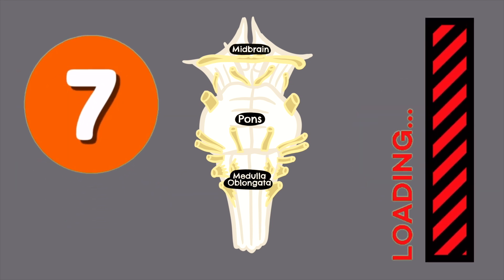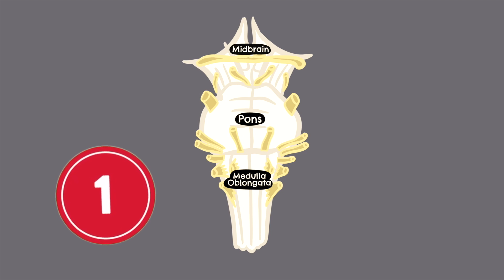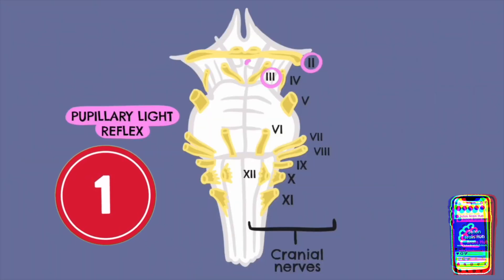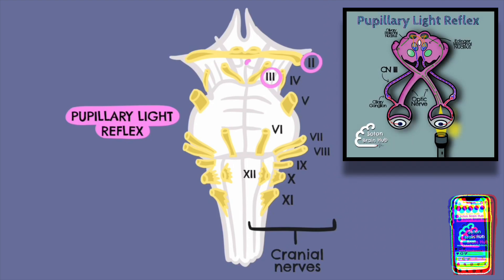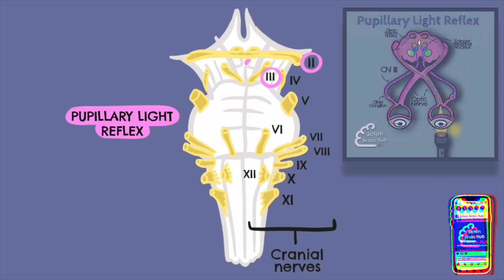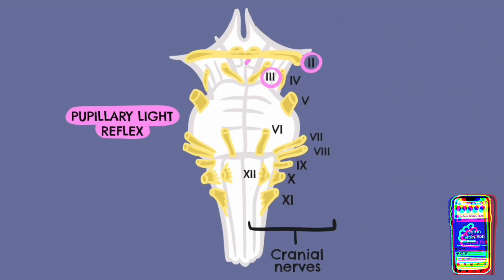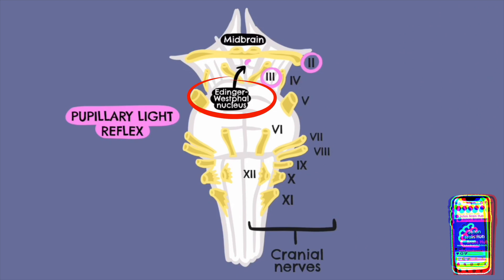There are seven tests. Number one: the pupillary light reflex. This involves testing for direct and consensual pupil reflexes in response to shining a bright light into each eye. Normally by doing this you would expect to see pupil constriction, but in brainstem death the response would be the absence of pupil constriction. The afferent or sensory nerve in this reflex arc is the optic nerve. The involved brainstem nucleus is the Edinger-Westphal nucleus in the midbrain, and the efferent or motor nerve is the oculomotor nerve.